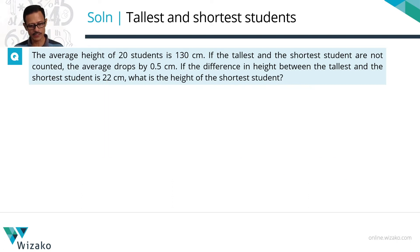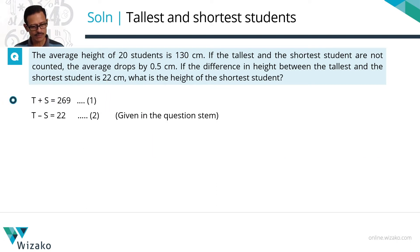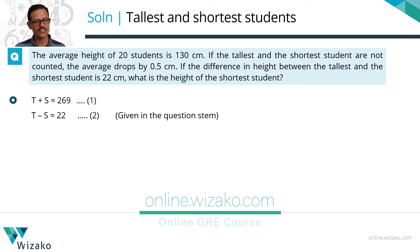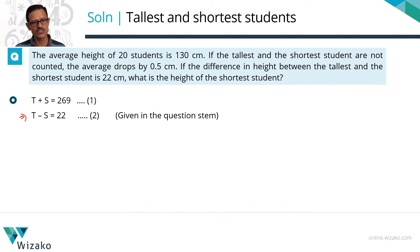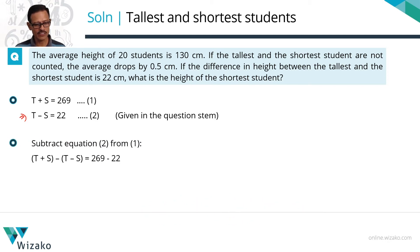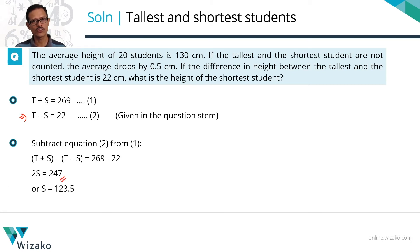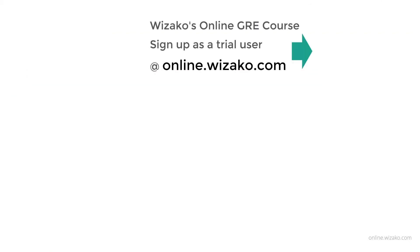Let us also present this in printed form. Tallest plus shortest equals 269, which we got from the previous table. The question mentions tallest minus shortest equals 22. So equation 1 minus equation 2 gives us 2s, which is equal to 247. So the shortest student's height is 123.5 cm.